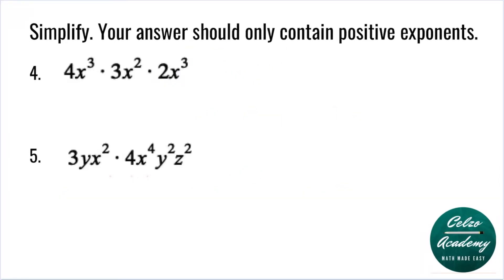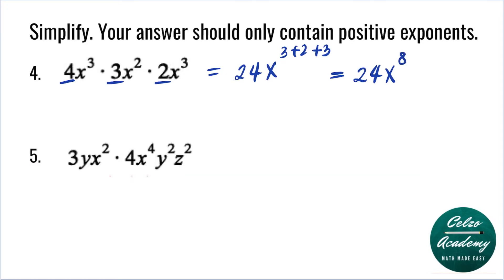Question number four: 4x cubed times 3x squared times 2x cubed. The first thing we need to do is multiply the numerical coefficients 4 times 3 times 2, which equals 24. For the variable x, we add the powers 3, 2, and 3, which equals 8. So the answer is 24x to the power of 8.